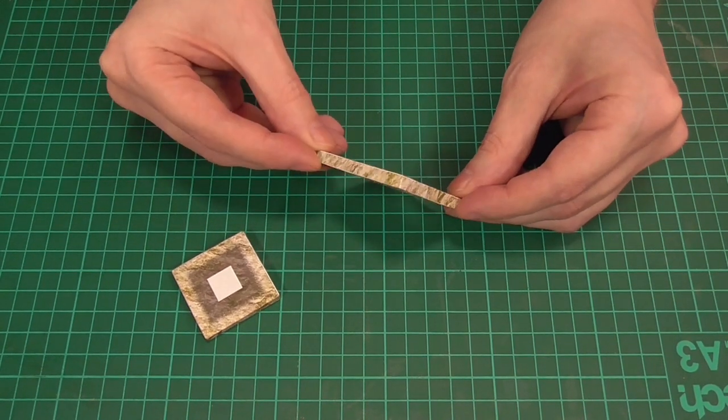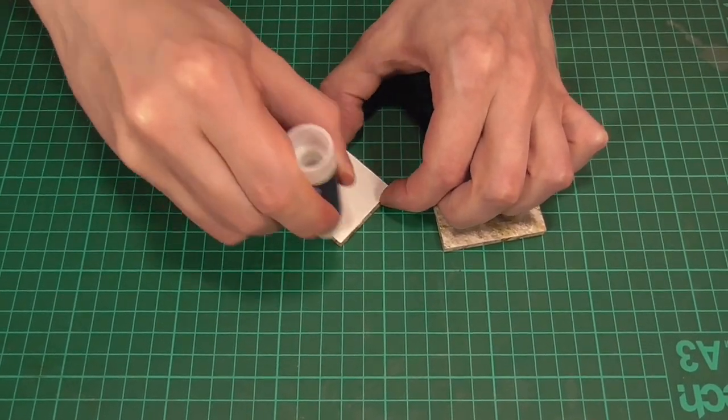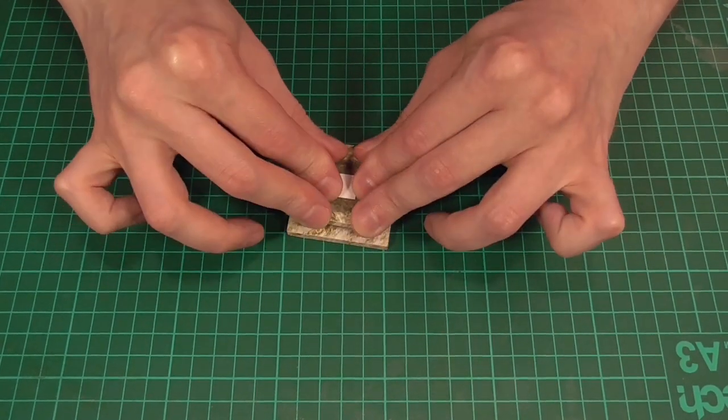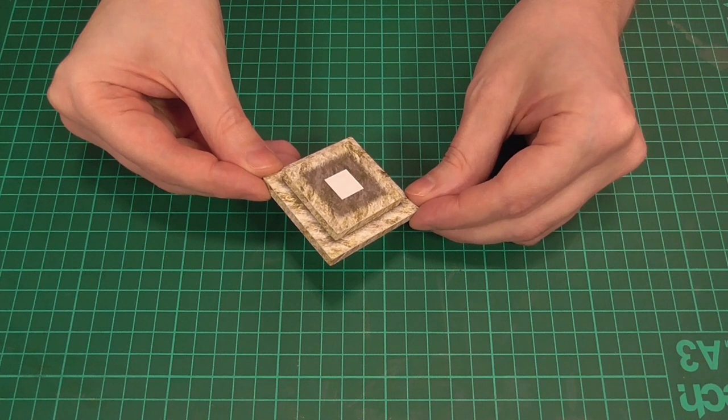Then we can do the exact same thing again for the other square piece as well. And as you've probably guessed we'll just need to glue the smaller one on top of the larger one just using a regular glue stick. And that should result in a nice little plinth like you can see here.